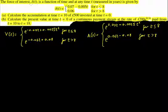So it says the force of interest delta t is a function of time, and at any time t measured in years is given by all of that. So let's do part A.